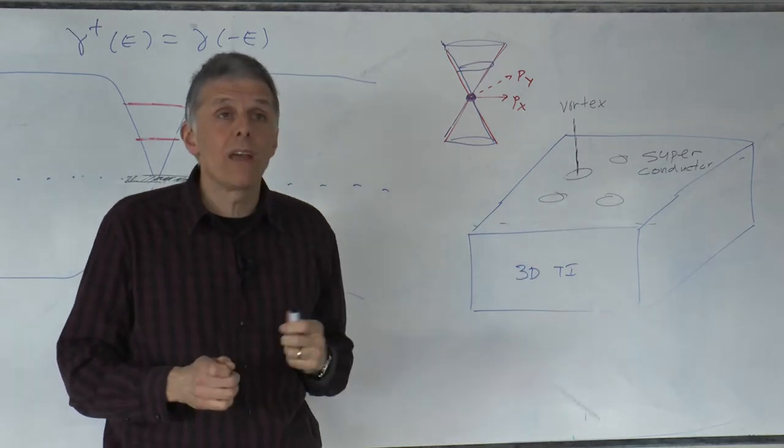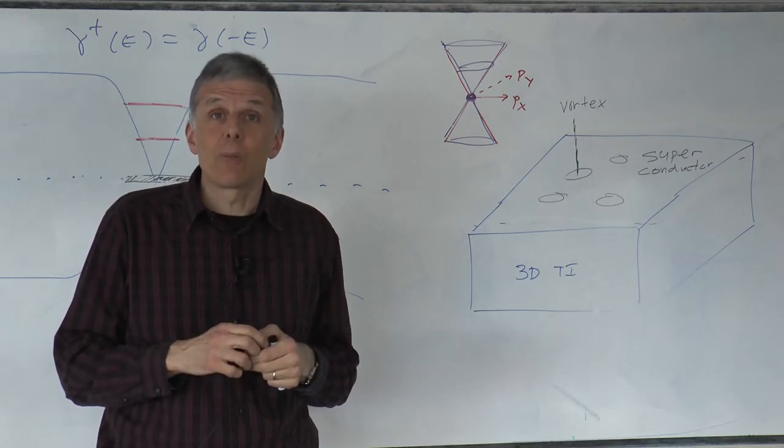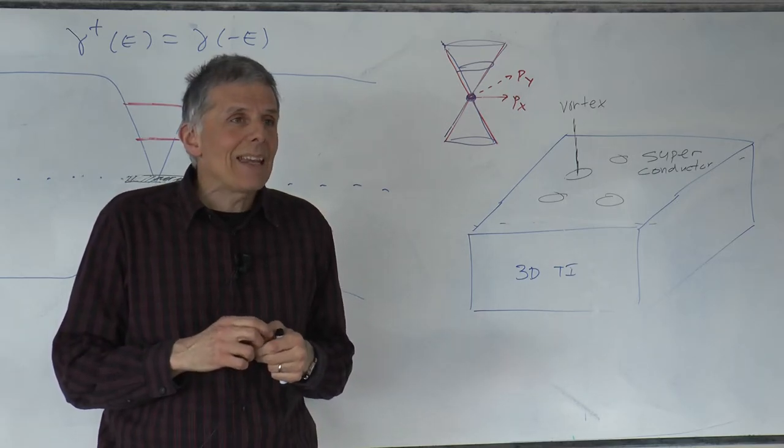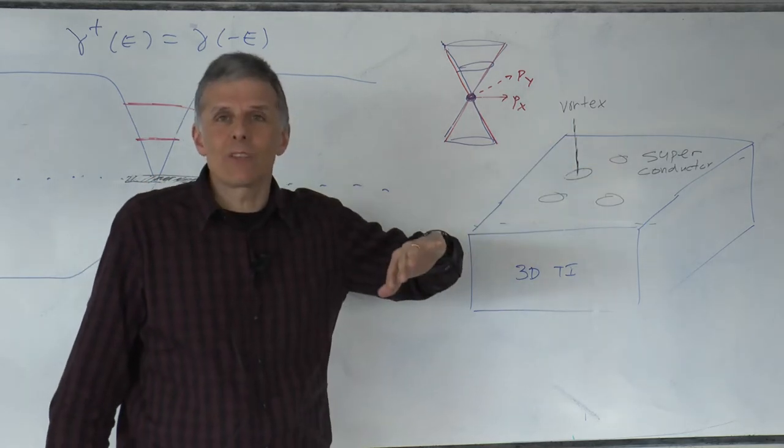And the same chiral symmetry is operative at the surface of the three-dimensional topological superconductor. And there is a fundamental difference between systems with or without chiral symmetry.